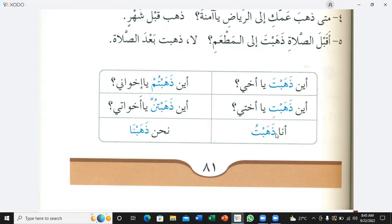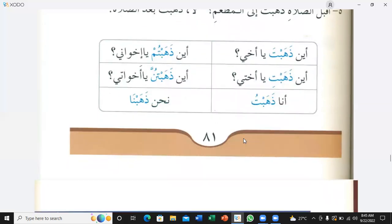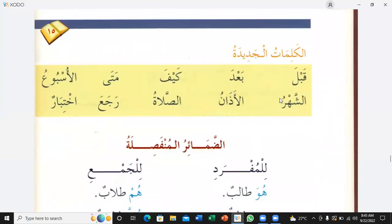Where did you go, oh my brother? Where did you go, oh my brothers? Where did you all go? Where did you go, oh my sister? Where did you all go, oh my sisters? Good. Al-kanima tum jadida. Qabla — before. Ba'da — after. Kaifa — how. Mata — when. Al-usbuu — week.